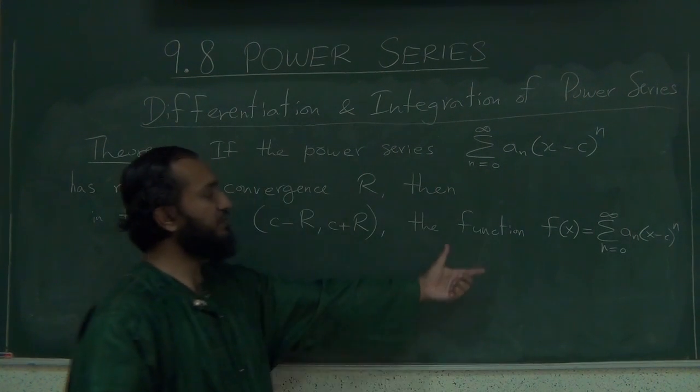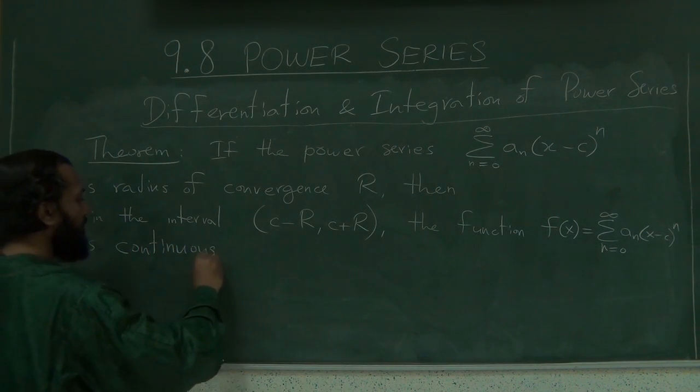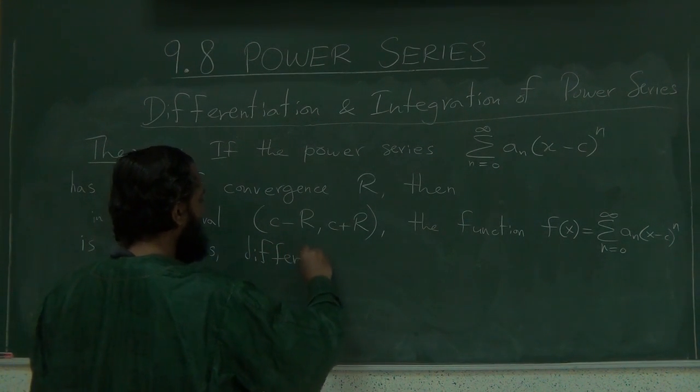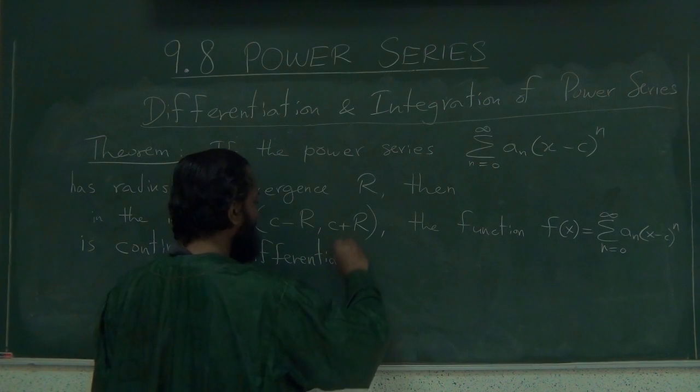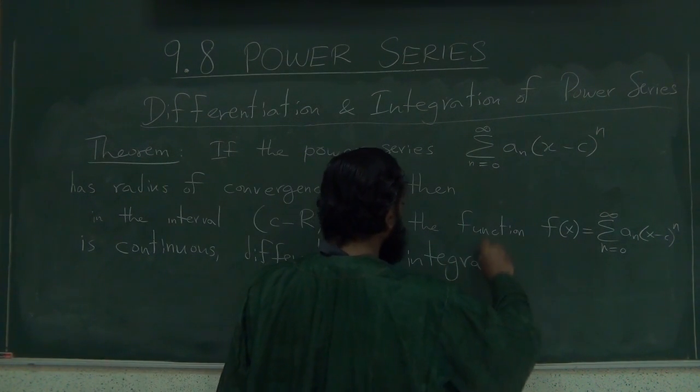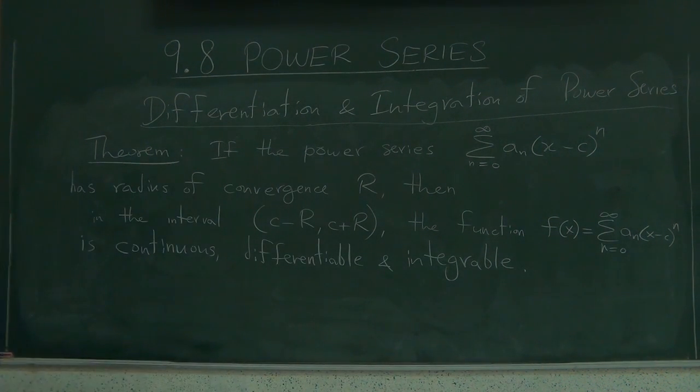So if you look at this power series as a function, this function in this interval is continuous, differentiable, which means its derivative exists at every point there, and integrable, and you can integrate it, its antiderivative exists as well, okay?